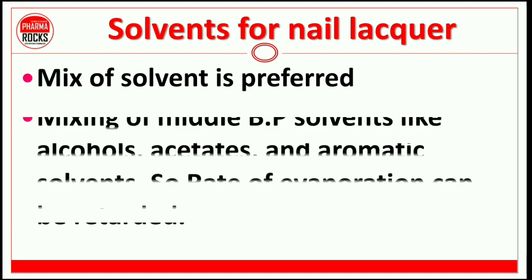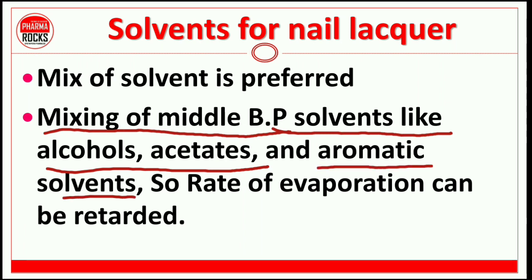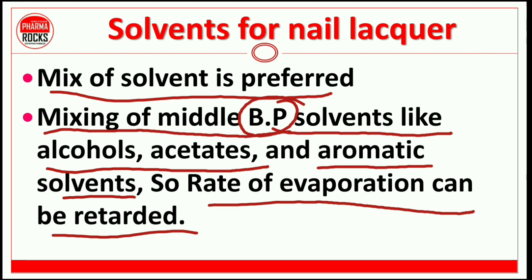Solvents for nail lacquer: a mixing of solvents is preferred. The reason is that mixing of middle boiling point solvents like alcohols, acetates, and aromatic solvents means the rate of evaporation can be retarded. Since volatile solvents have the main property of being volatile in nature, the rate of evaporation needs to be decreased. For this, middle boiling point solvents are mixed together and used as a solvent for nail lacquer preparations.